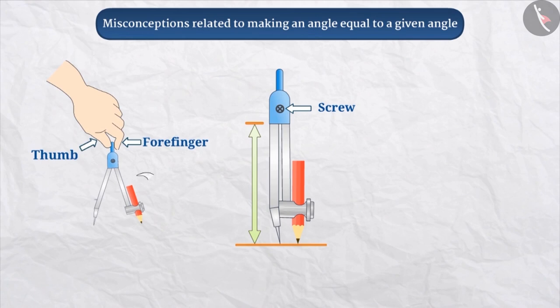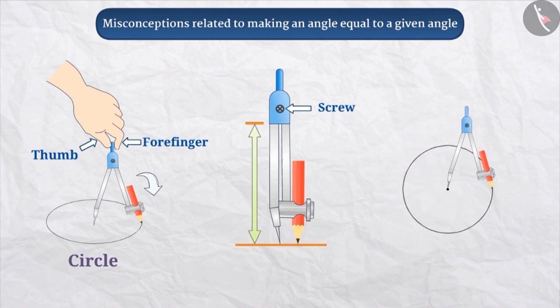Then, the circle is drawn by rotating the compass slowly. Keep in mind that the compass must be precise at a certain point, and while drawing an arc or circle, the compass should not be moved from its fixed position, and special attention should be paid to it.